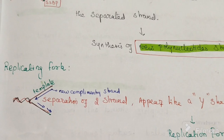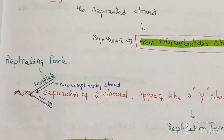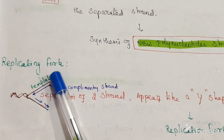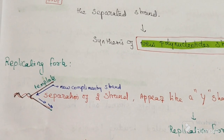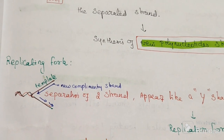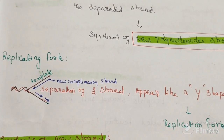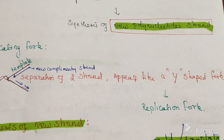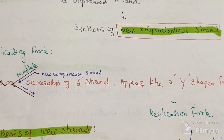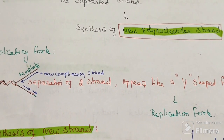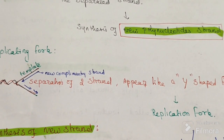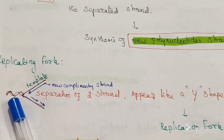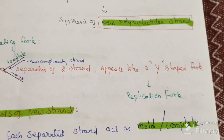The replication fork is the point formed due to unwinding. The separation of the two strands appears like a Y shape, and this Y-shaped fork is called the replication fork.